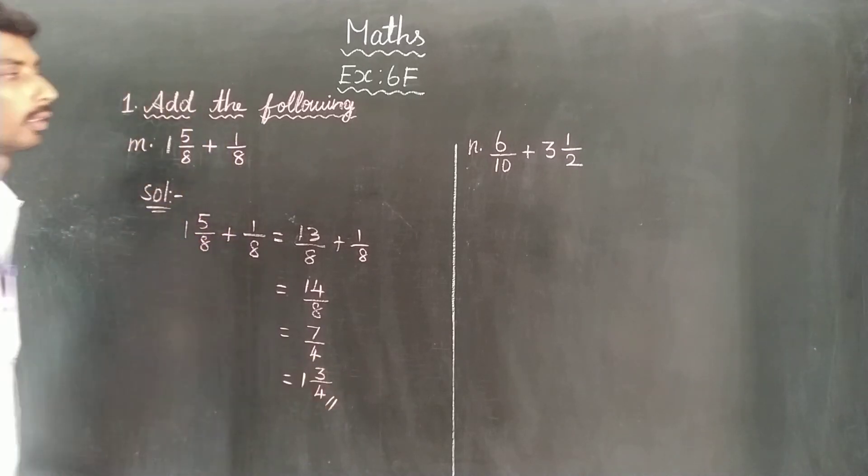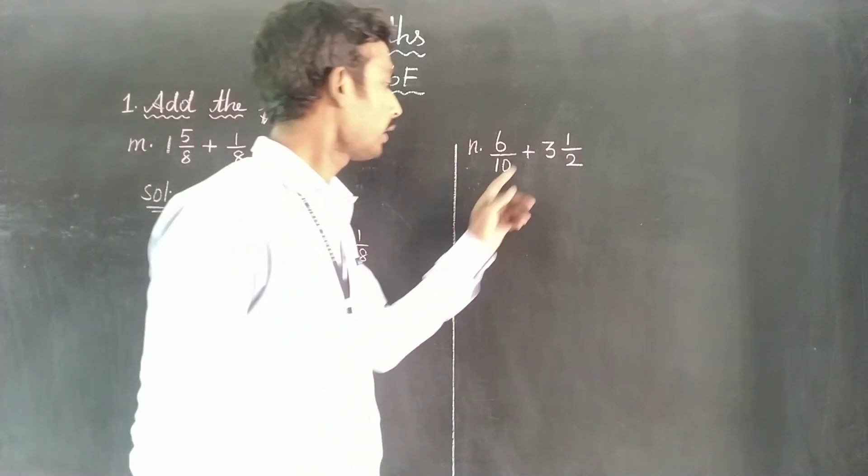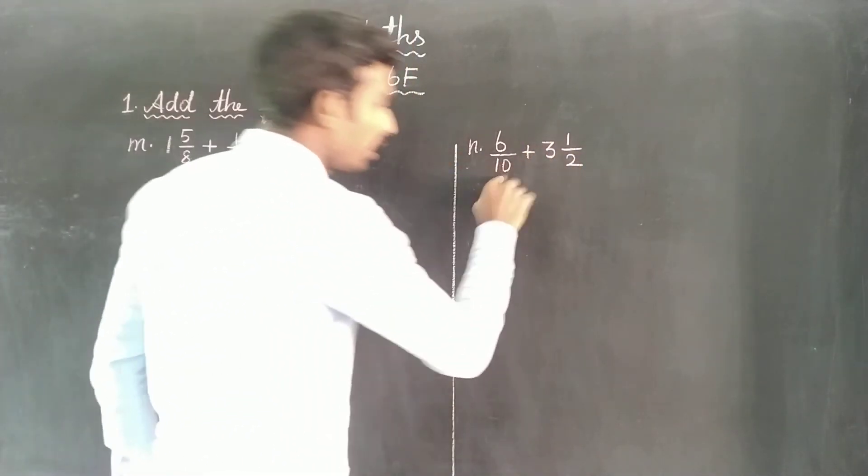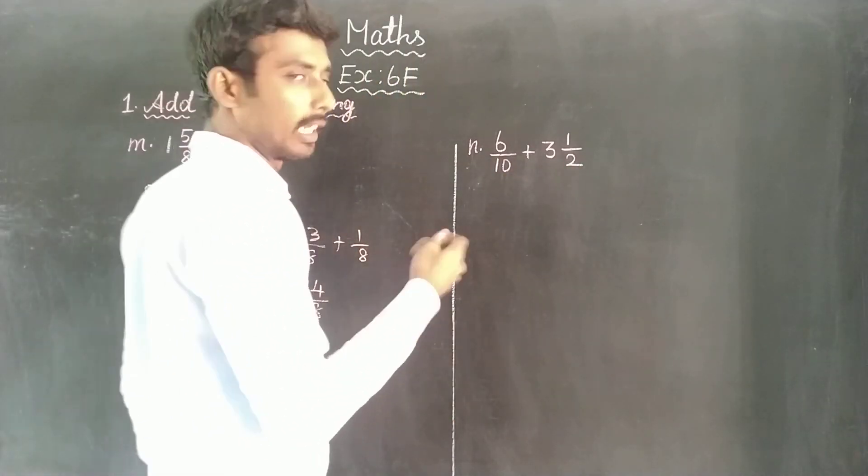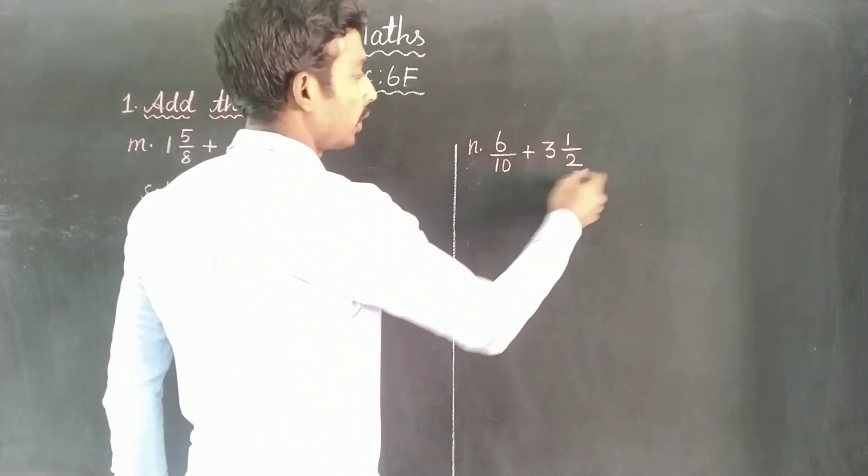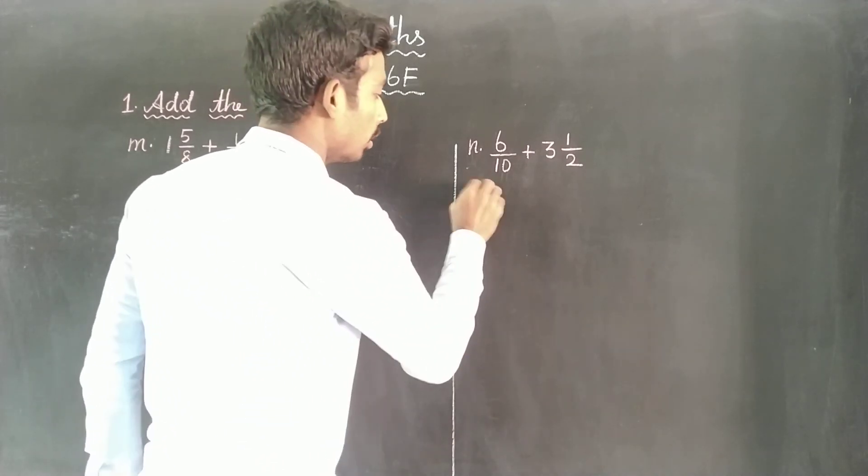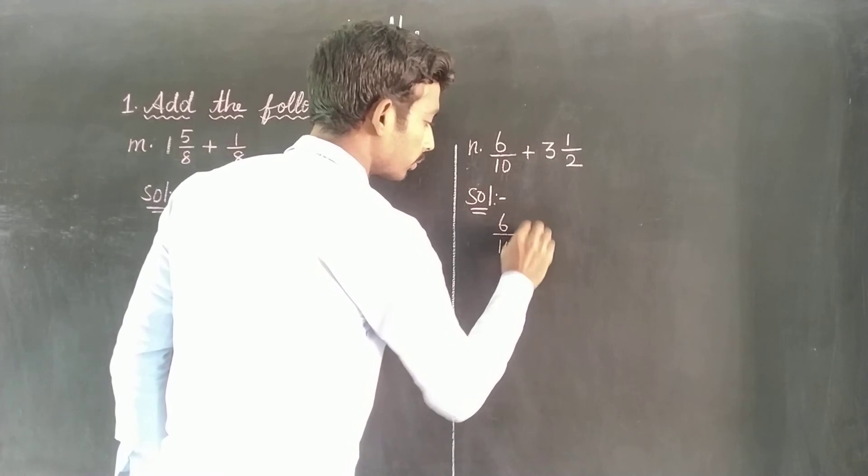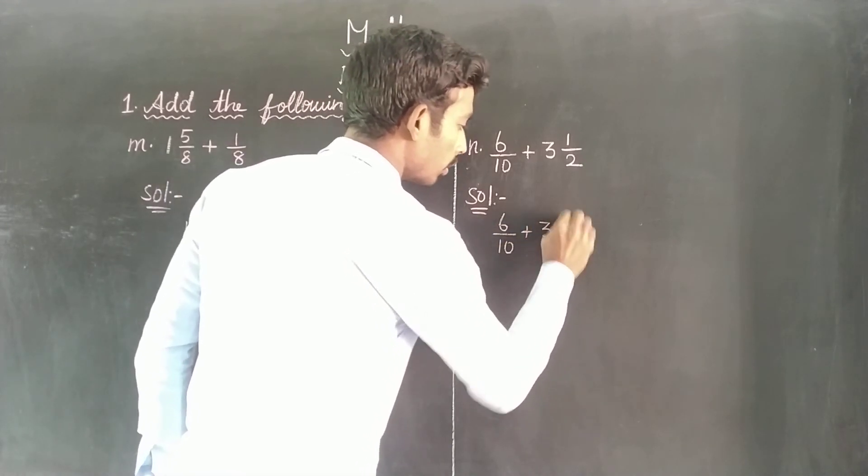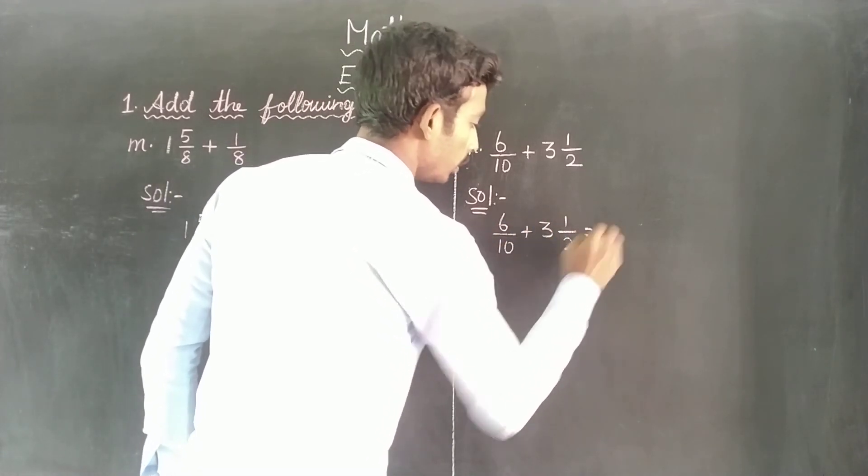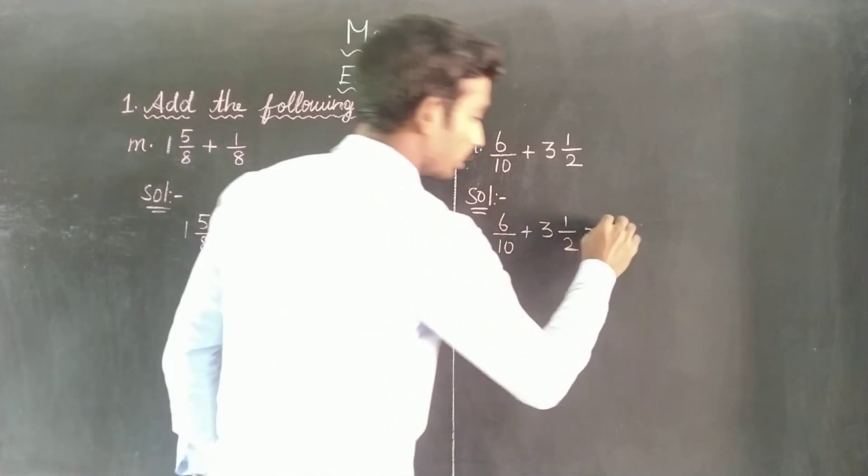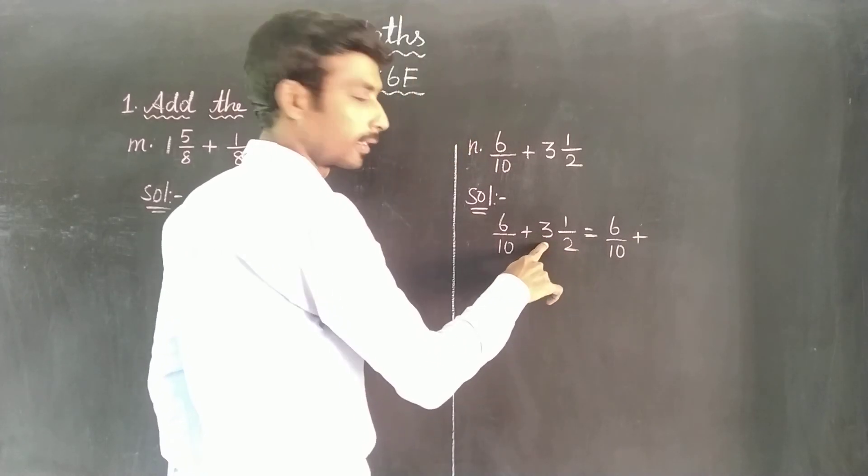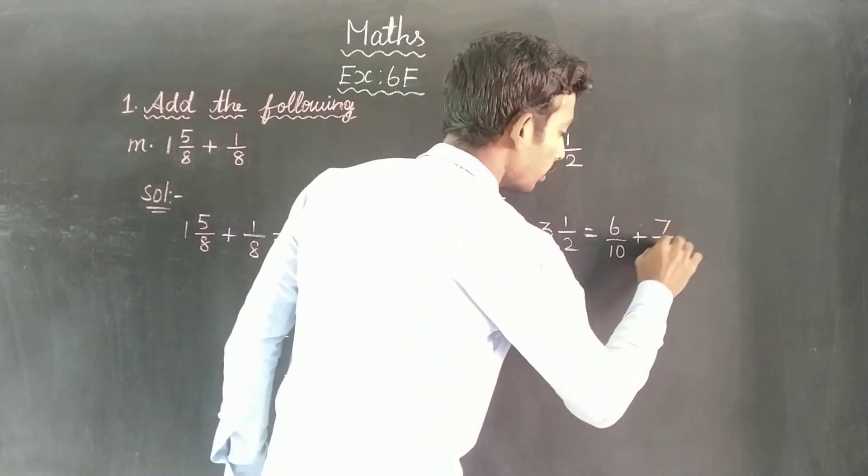This can be simplified. Next problem: 6/10 plus 3 and 1/2. We have 3 and 1/2 equals... So 6/10 plus, converting the mixed number: 2 times 3 is 6, 6 plus 1 is 7, so 7/2.